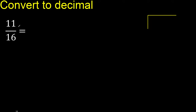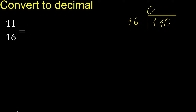11 divided by 16. 11 is less, therefore complete always — complete with zero. And here zero point. 110 is not less, therefore 16 multiply by which number is nearest to 110 but not greater.